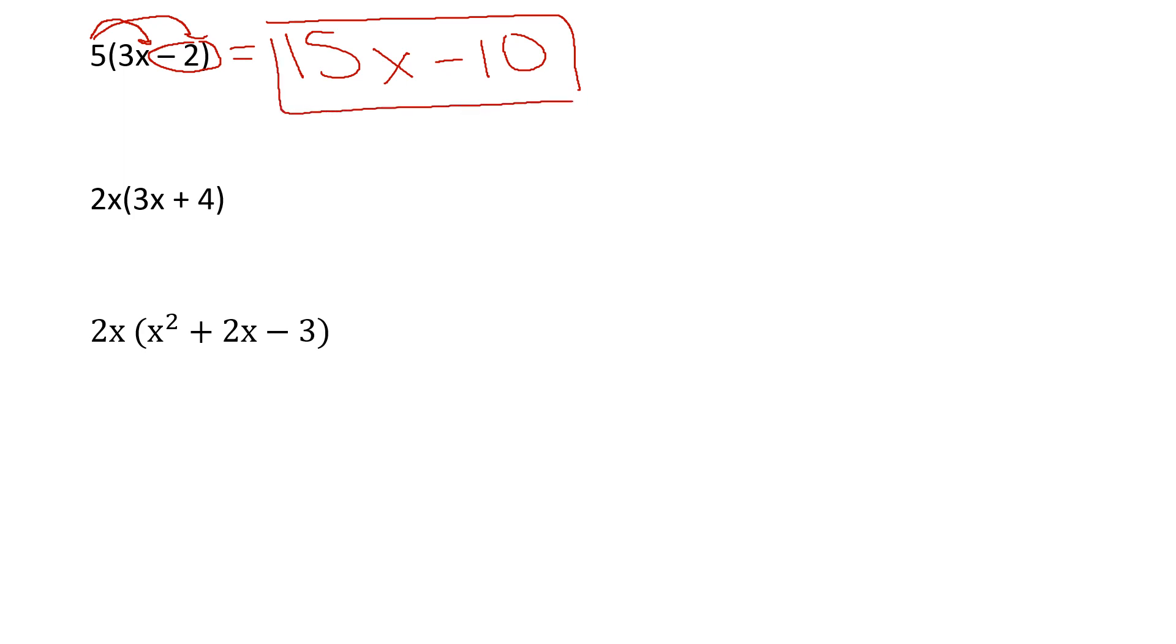So on this one, look inside of my parentheses. I can't do anything inside of my parentheses, so I'm going to look outside. Outside, there is a 2x. 2x times 3x. 2 times 3 is 6. x times x is x squared. Then 2x times positive 4 is plus 8x. That's it.